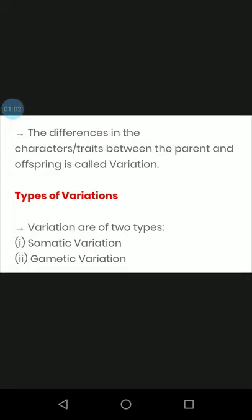The difference between the parent and the offspring is called variation. Variation occurs as heredity passes characters from parent to offspring.